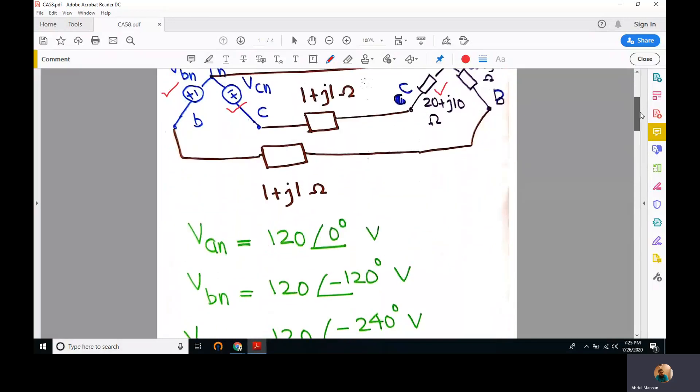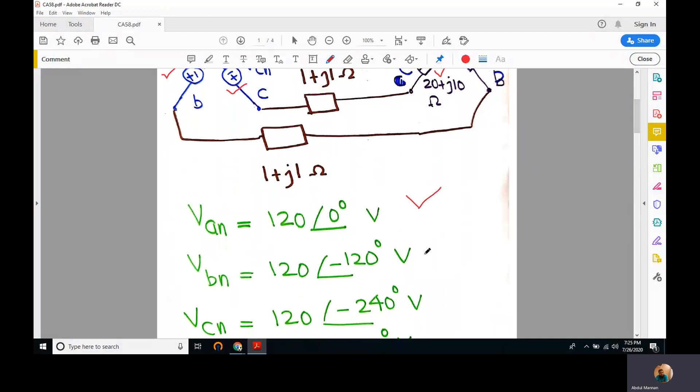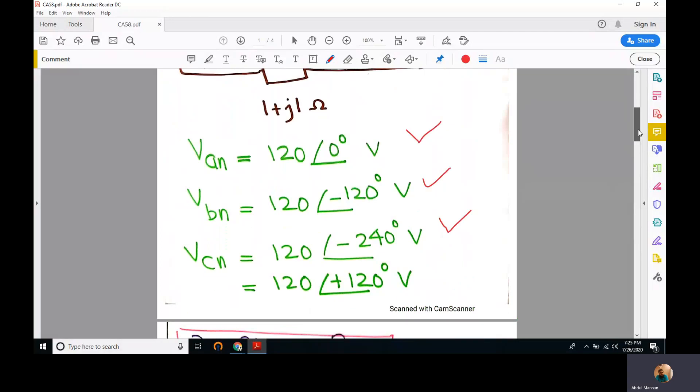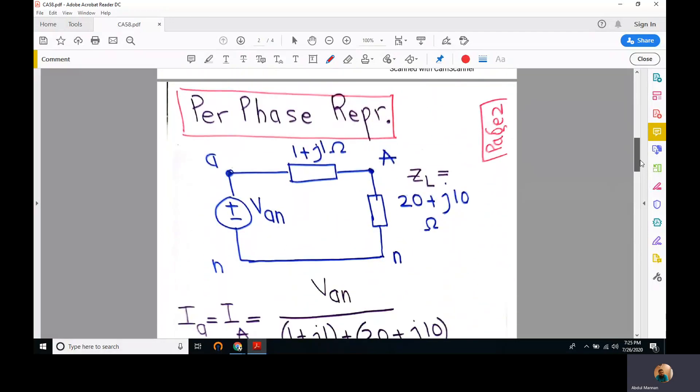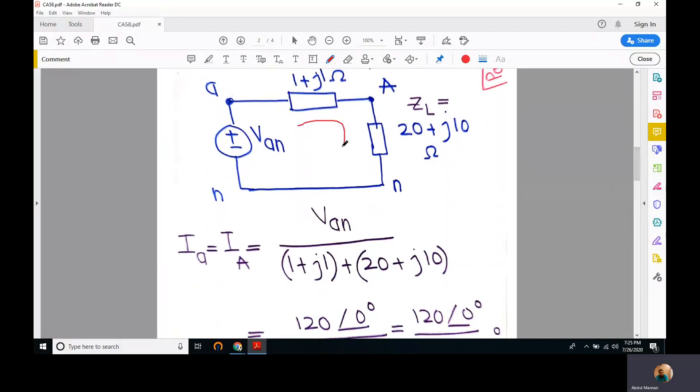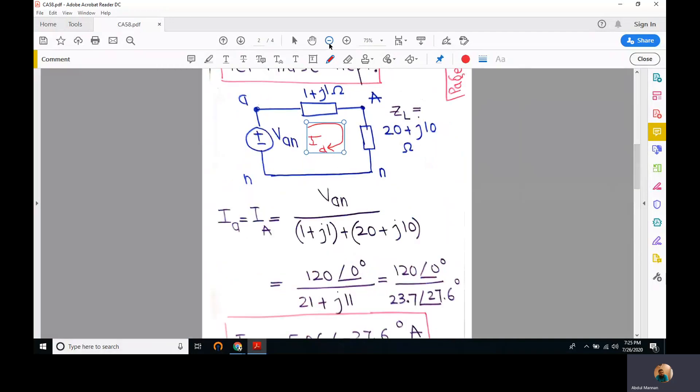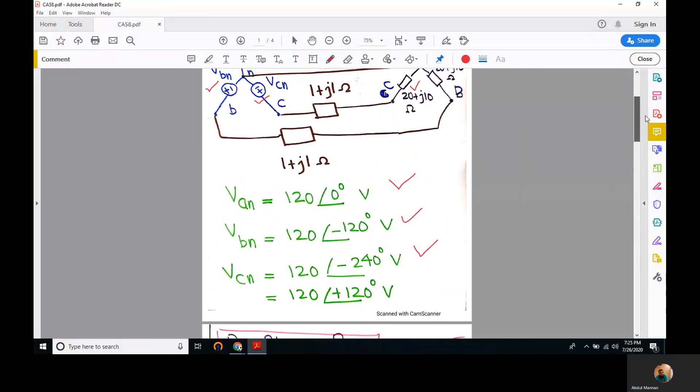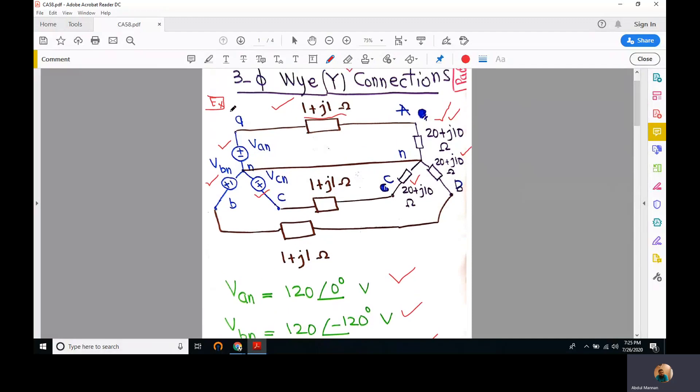All three phase voltages are 120 degrees apart from each other in this balanced three-phase system. We are required to find the current flowing per phase. In earlier lectures we studied that line current and phase current is the same in a wye connected system, so Ia, the phase current or line current, Ip or Il, is the same.